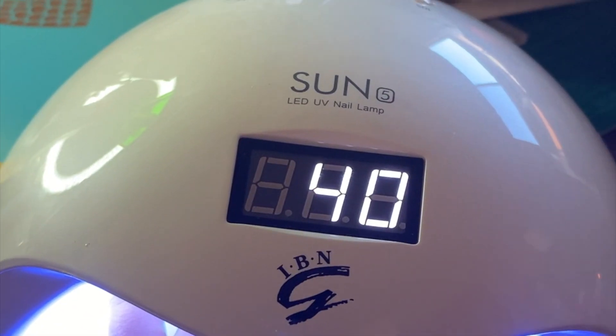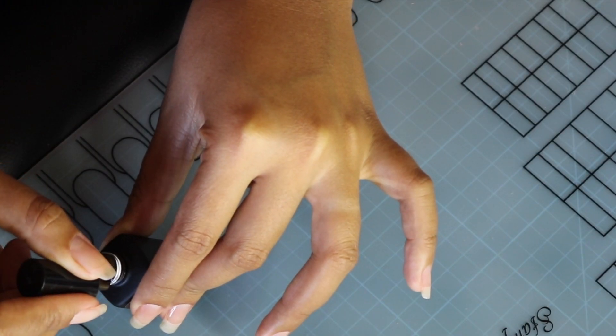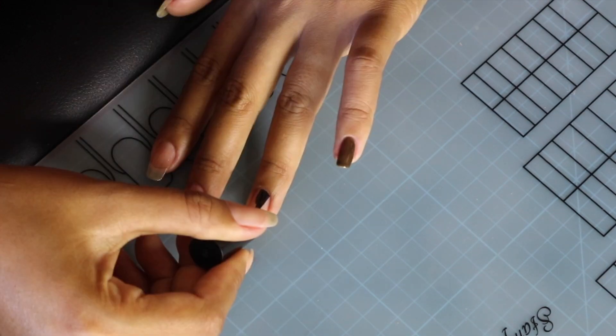Step 2 is the color gel polish. I have espresso in color here.